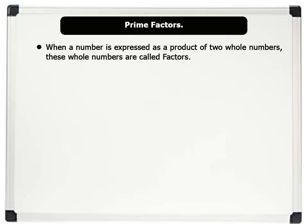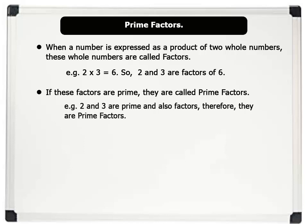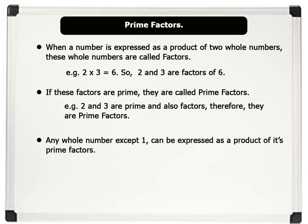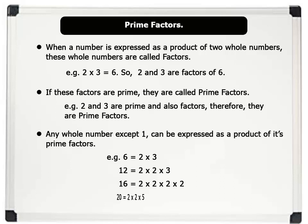When a number is expressed as a product of two whole numbers, these whole numbers are called factors. For example, 2 times 3 equals 6, so 2 and 3 are factors of 6. If these factors are prime, they are called prime factors. For example, 2 and 3 are prime and also factors, therefore they are prime factors. Any whole number except 1 can be expressed as a product of its prime factors. For example: 6 equals 2 times 3; 12 equals 2 times 2 times 3; 16 equals 2 times 2 times 2 times 2 times 2; and 20 equals 2 times 2 times 5.